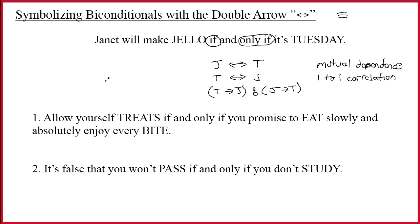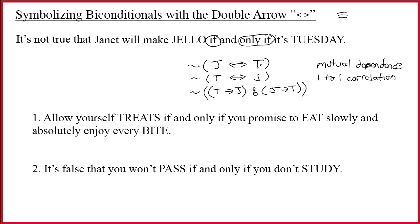Now let's add 'it's not true that' in front of the sentence. When we do that, we add a tilde. The easy and obvious thing to do is put a tilde outside parentheses — tilde (j double arrow t) — and this is 100% correct. It turns out the only way for it to be false that there's a correlation is if j is false and t is true, or j is true and t is false. Both of these alternative symbolizations are actually equivalent to putting the tilde outside parentheses.